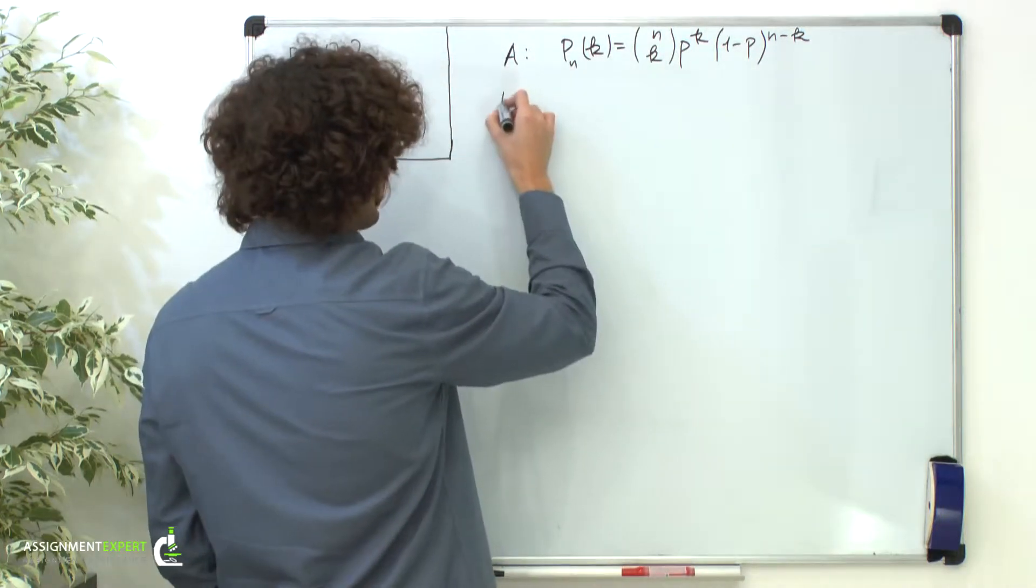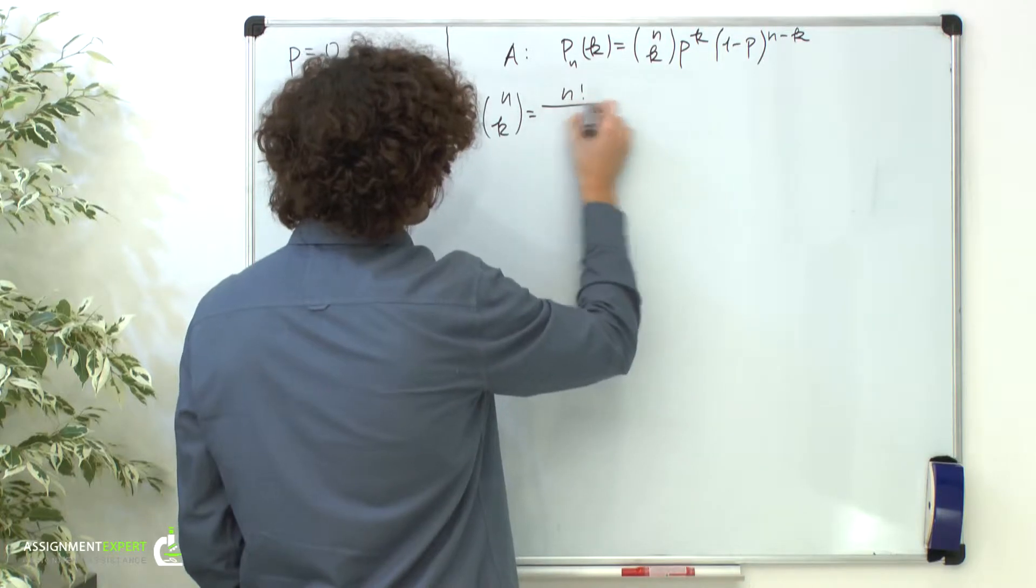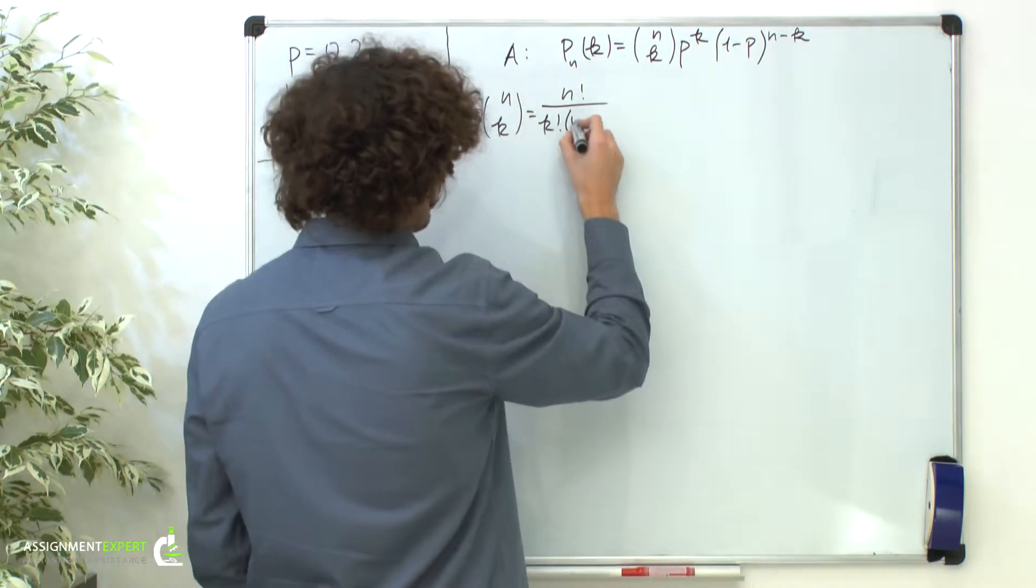n choose k equals n factorial over k factorial times (n minus k) factorial.